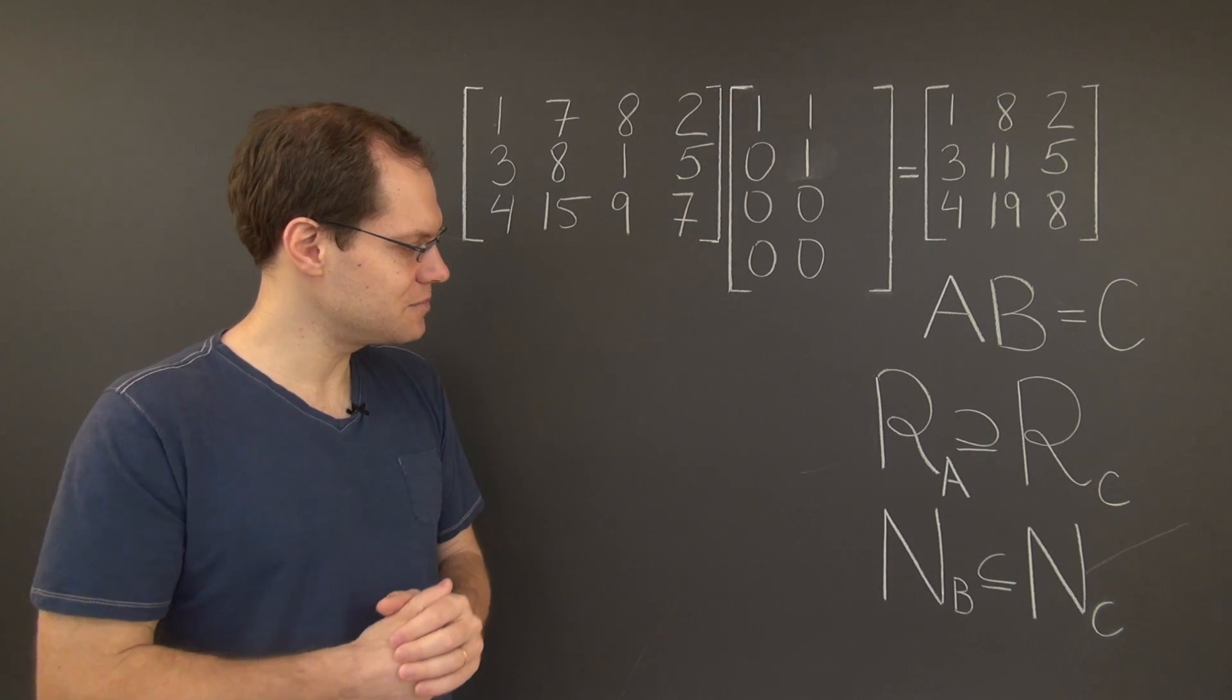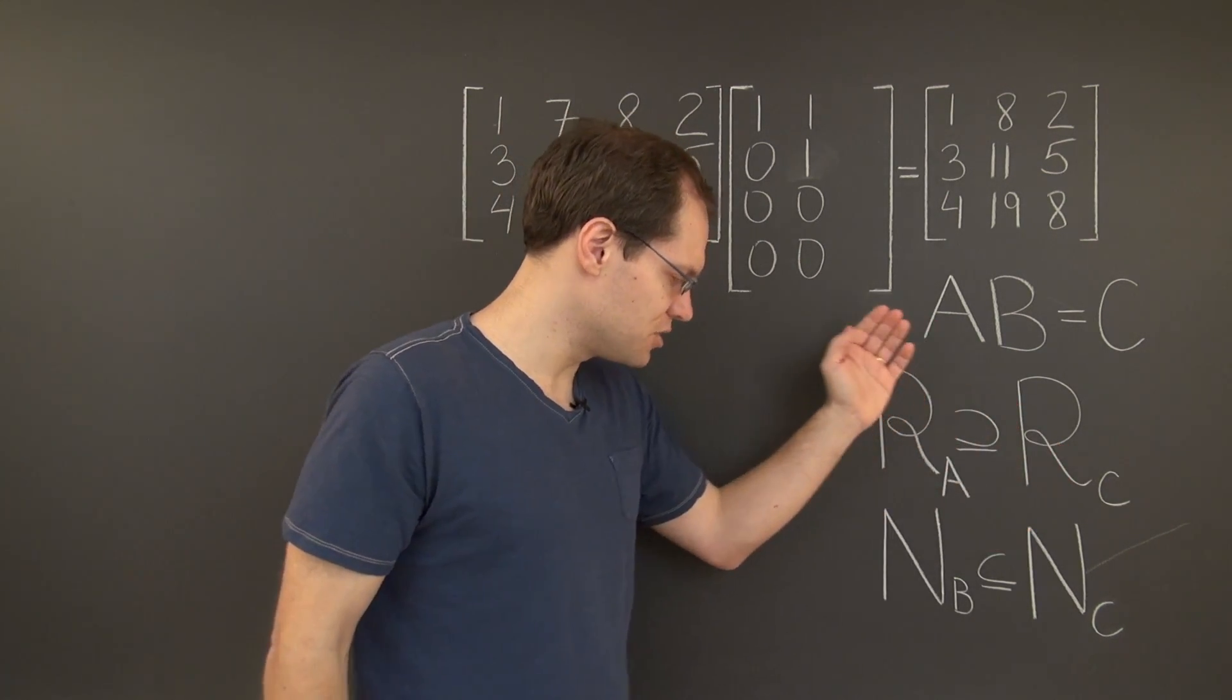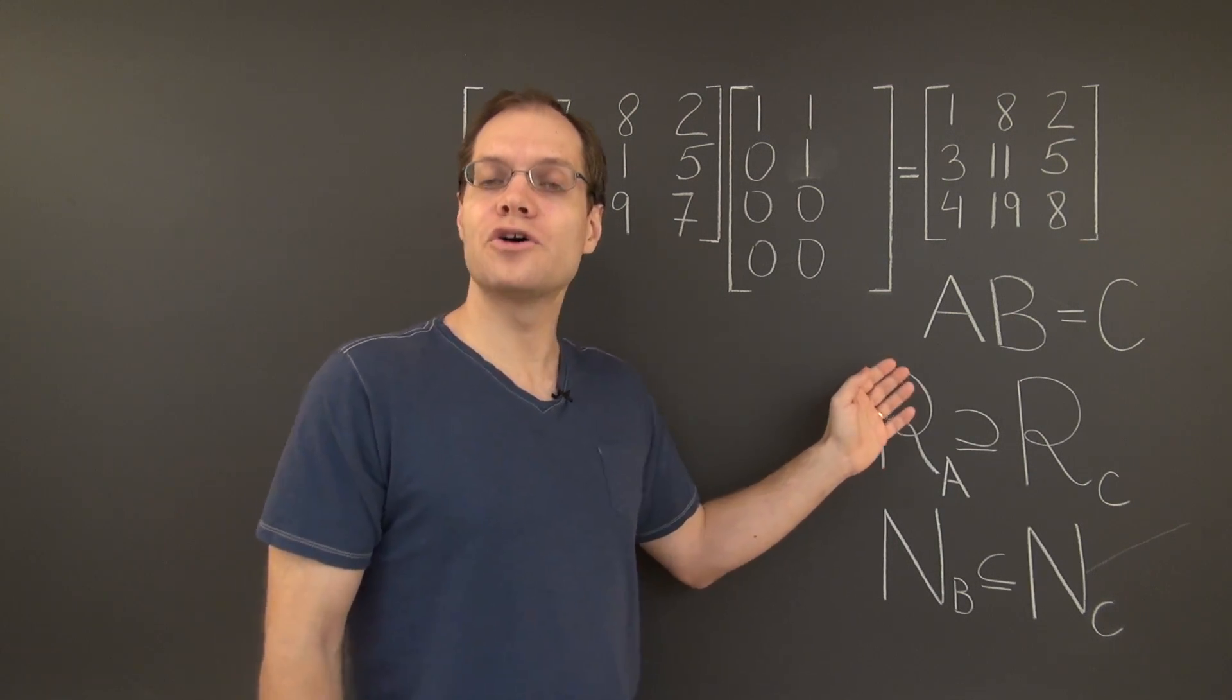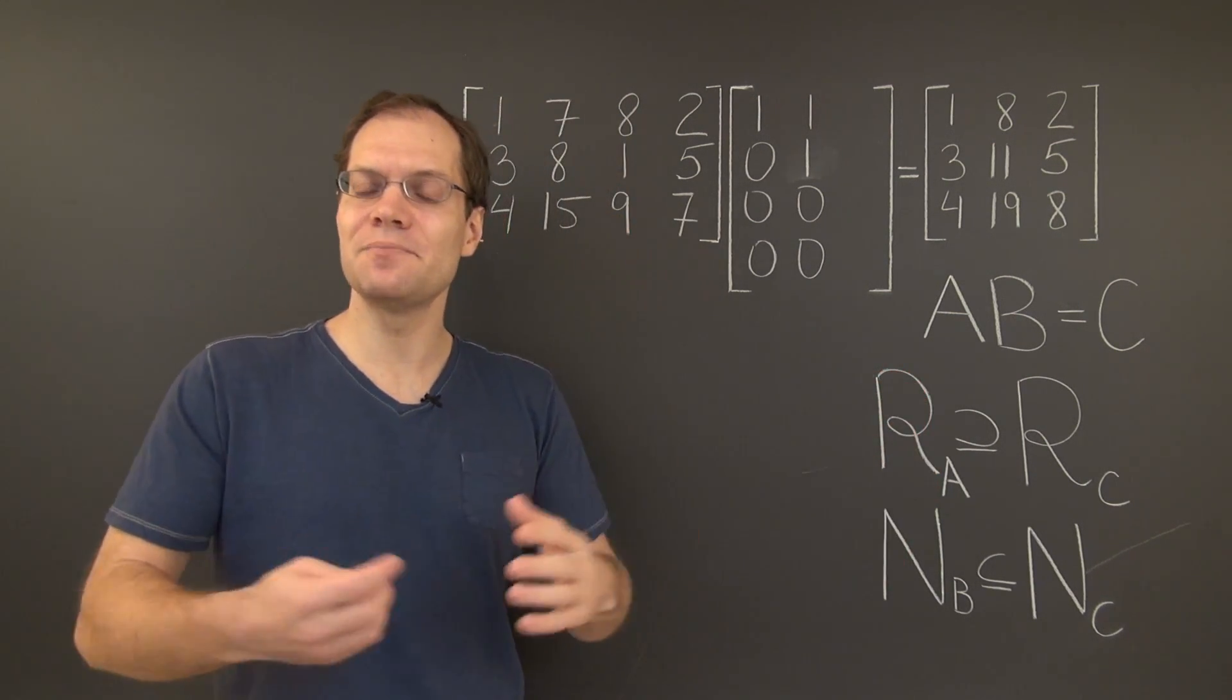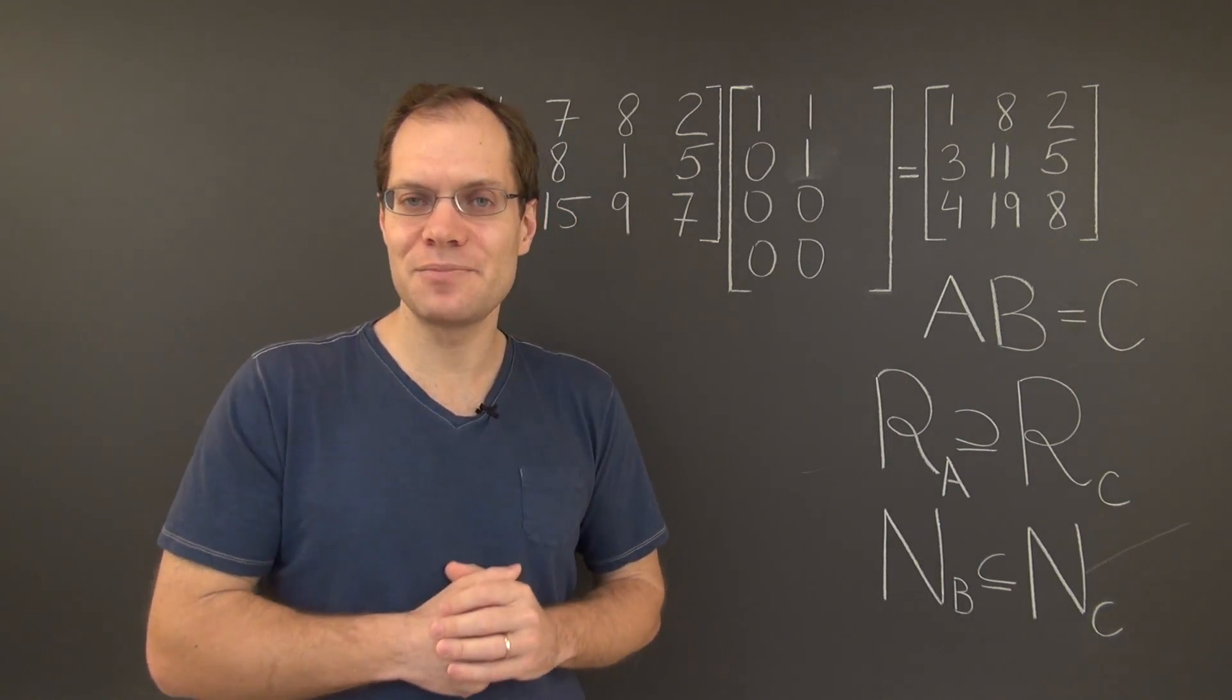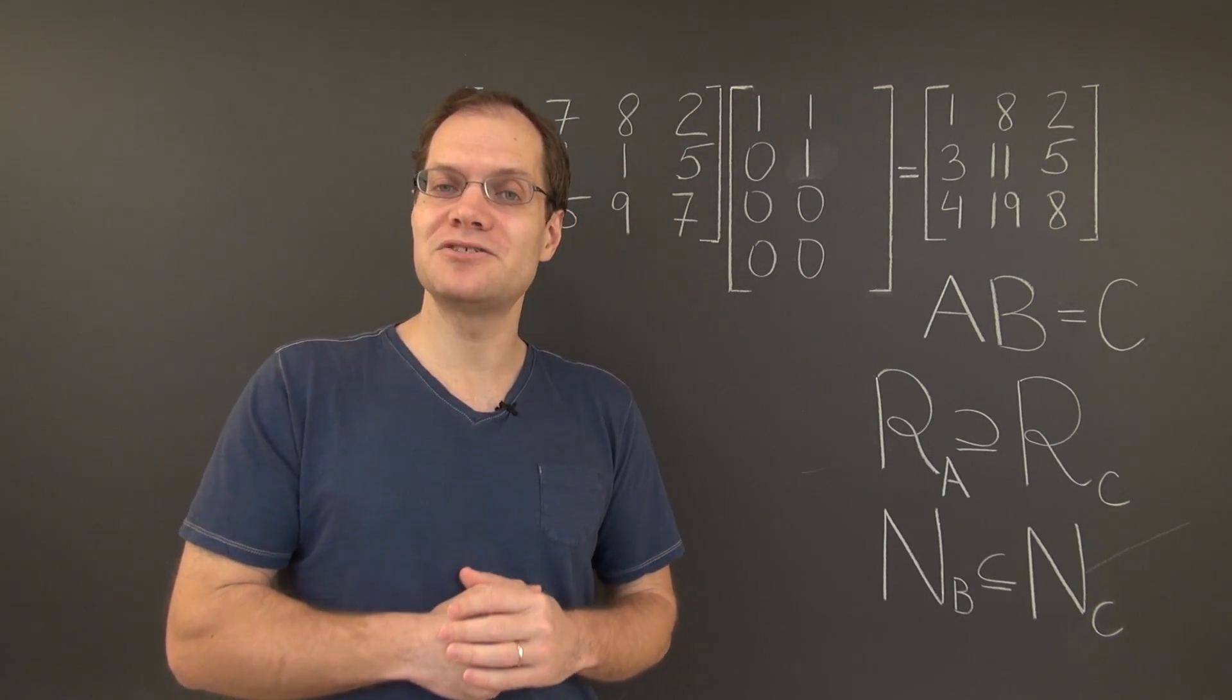So there you go. We answered the question. The column space of C is related to the column space of A, and it's always the same or smaller. So this was a simple question after all. And we used this as an opportunity to spend a little bit more time talking about matrix multiplication.